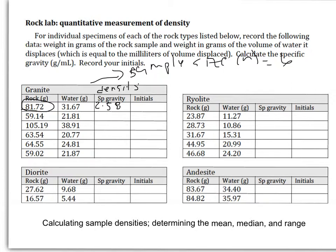Somebody do the next one, and we'll do a couple of these. Fifty-nine divided by twenty-one. Two point seven-one. One hundred and five divided by thirty-eight. One hundred and five point one-nine divided by thirty-eight point nine-one. Two point seven what?